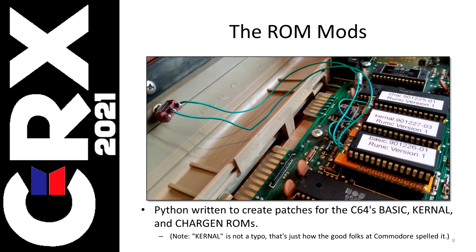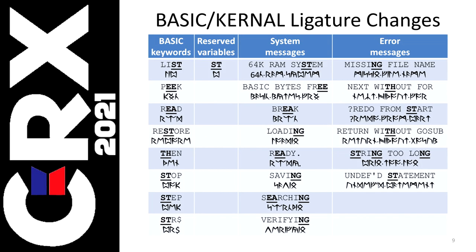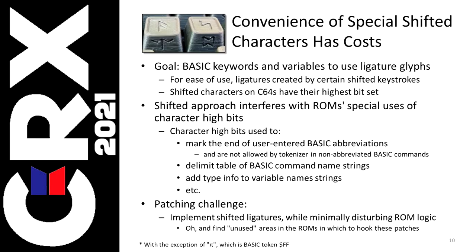So this is a look at the inside of the Commodore. That is the switch that switches between three ROMs: the character generator ROM — as you saw, the characters look different — the Commodore kernel, and the Commodore BASIC. The BASIC and kernel have to be changed in a number of ways. One of them is all of these ligatures — these two-letter symbols occur quite frequently in the BASIC keywords and in system and error messages throughout the BASIC and the kernel, so all of those were changed. The goal was for the BASIC keywords and variables to use the ligatures however they wanted. However, having them be shifted characters came with some costs, because shifted characters on the Commodore have their highest bit set when you shift. The ROMs use that highest bit to flag certain operations: they mark the end of user-entered BASIC abbreviations, delimit the table of BASIC command name strings, and add type info to variable name strings.